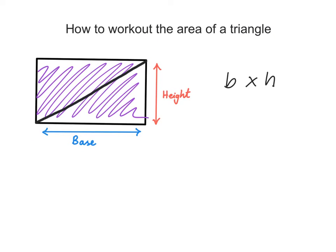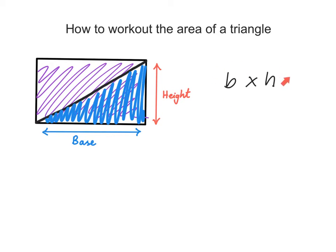If I were to now halve the rectangle diagonally, and I were to ask you what is the area of half of this rectangle, well, clearly you would say it's just the area of the entire rectangle divided by 2. By diagonally halving the rectangle, I created a triangle. So the area of a triangle is just half the area of a rectangle.